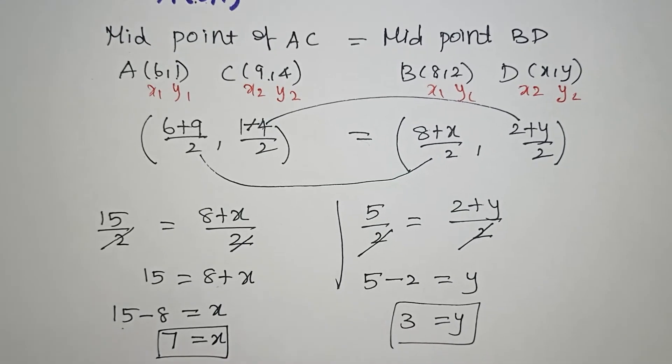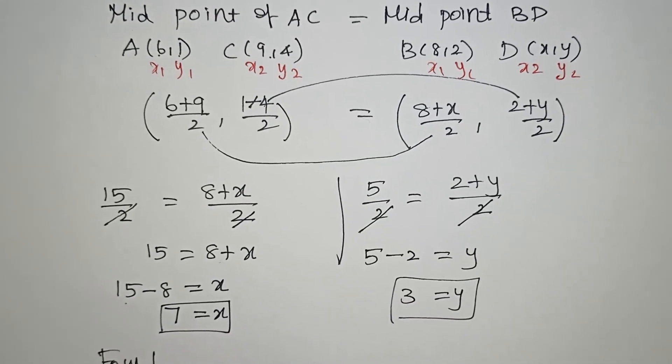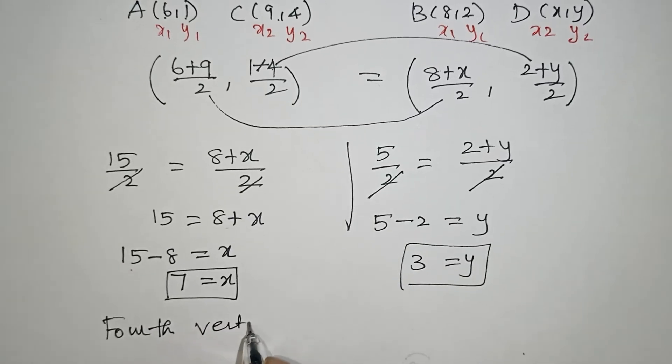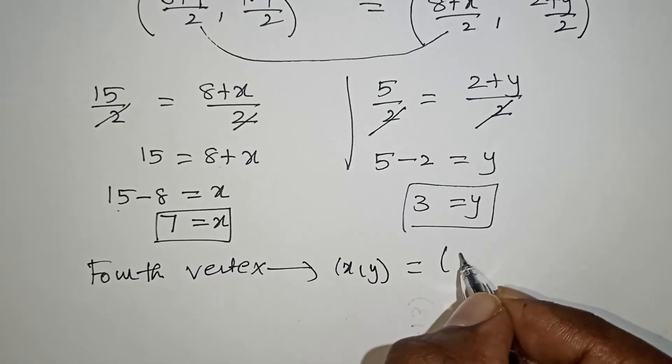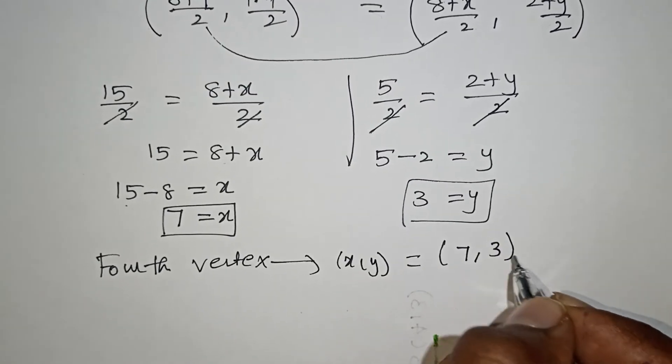Finally, they asked us to find the fourth vertex. The fourth vertex is X comma Y, which is 7 comma 3.